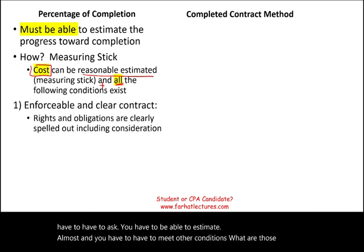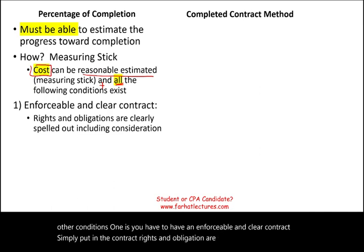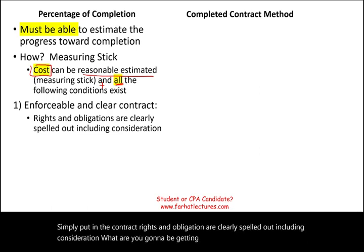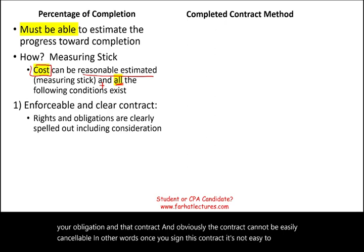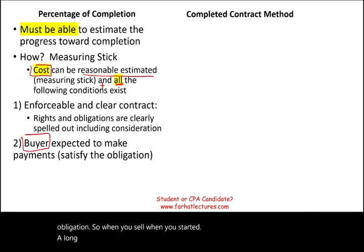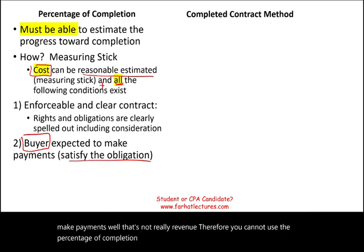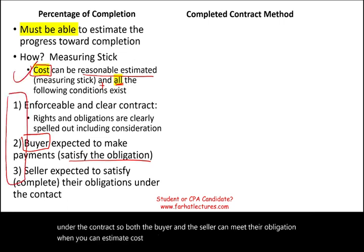In addition to estimating costs, three other conditions must be met. First, you must have an enforceable and clear contract where rights, obligations, and consideration are clearly spelled out, and the contract cannot be easily cancelled. Second, the buyer is expected to make payments to satisfy the obligation — if the buyer cannot pay, you cannot use the percentage of completion method. Third, the seller is expected to complete their obligations under the contract. When all four conditions are met, you can recognize revenue before delivery.